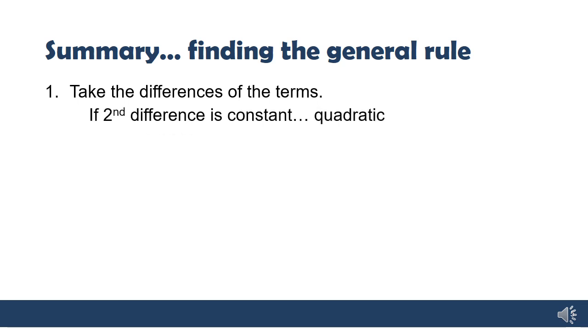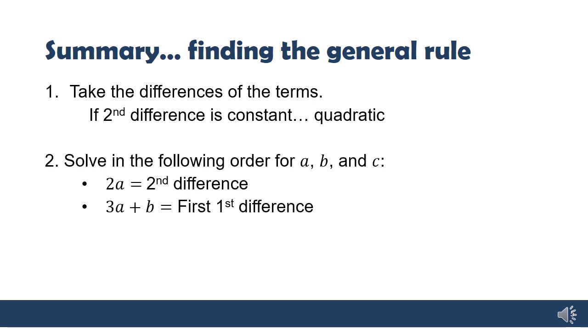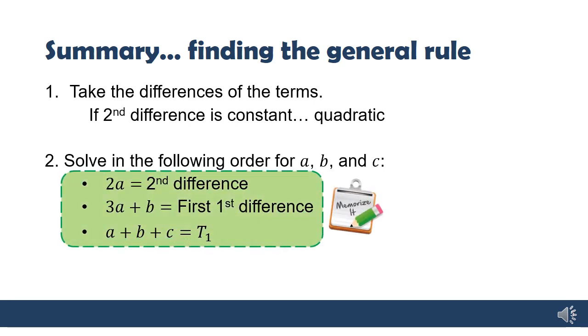So in summary, your steps to find the general rule of a quadratic number pattern. Firstly, you must determine that it is a quadratic number pattern. So take differences of the terms. If the second difference is constant, it means it's quadratic. And then you're going to solve in the following order for a, b, and c. 2a is equal to the second difference. 3a plus b is the first first difference. And a plus b plus c is the first term. These you need to memorize.